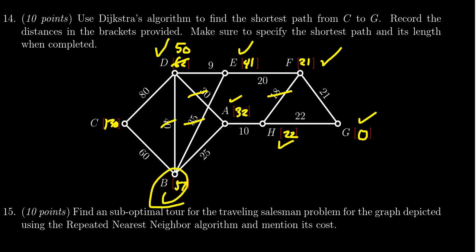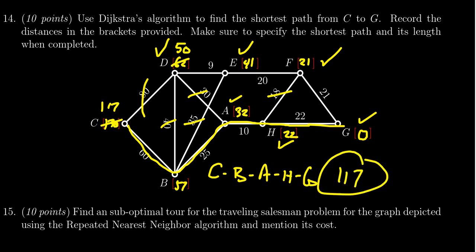We come here to B. 57 plus 60 in that situation gives us 117. That's a little bit shorter and so that's going to be the path we want. Therefore the path we're going to take is this one right here. The shortest path looks like C to B to A to H to G, and that's going to cost 117 to do that path.